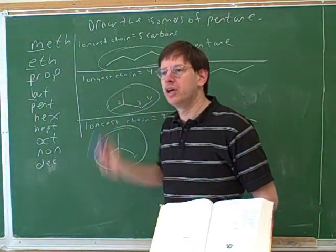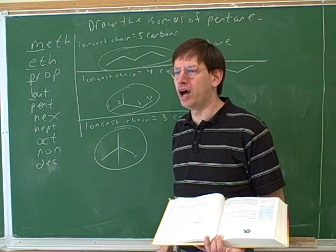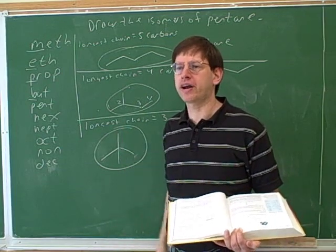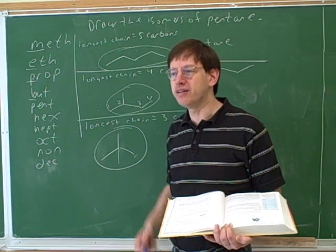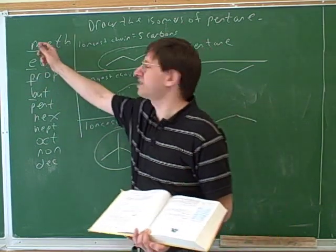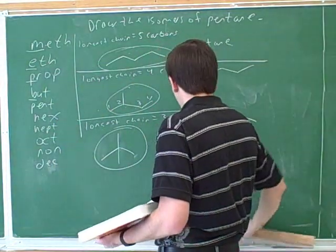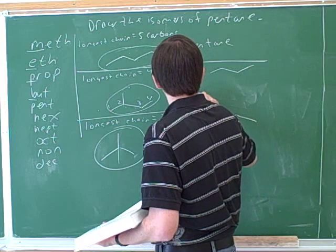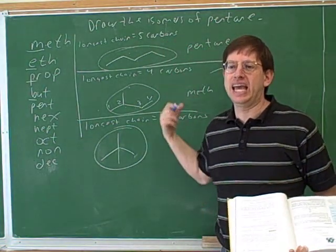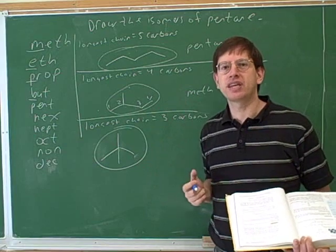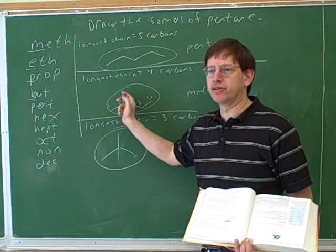Now we need to name this substituent. How many carbons are in this substituent? One. The root for one carbon — remember: men eat pickled beets — so first in that series is 'meth.' When something is on the main chain, we use the suffix '-ane,' but when something is a substituent, we use the suffix '-yl.'